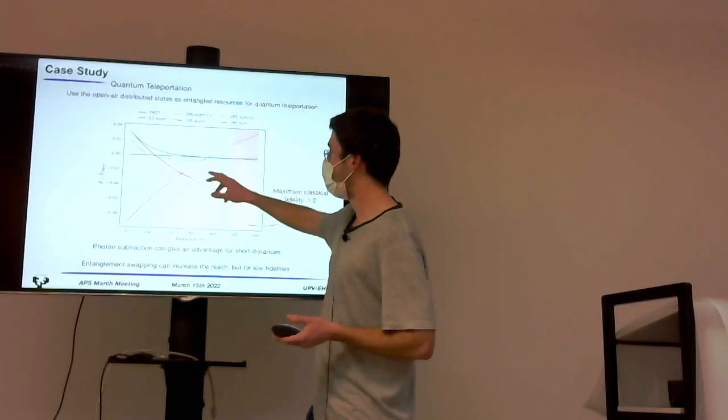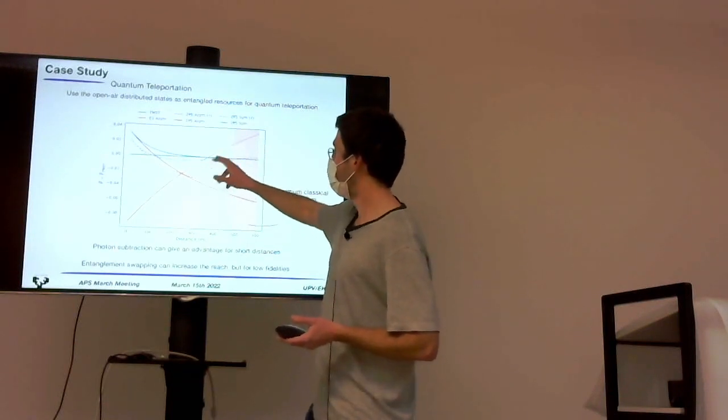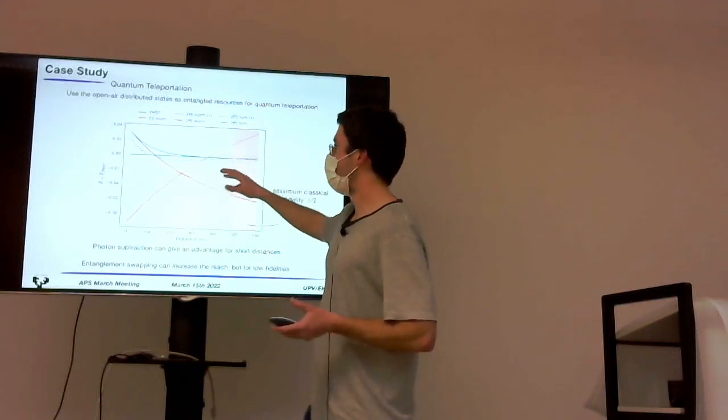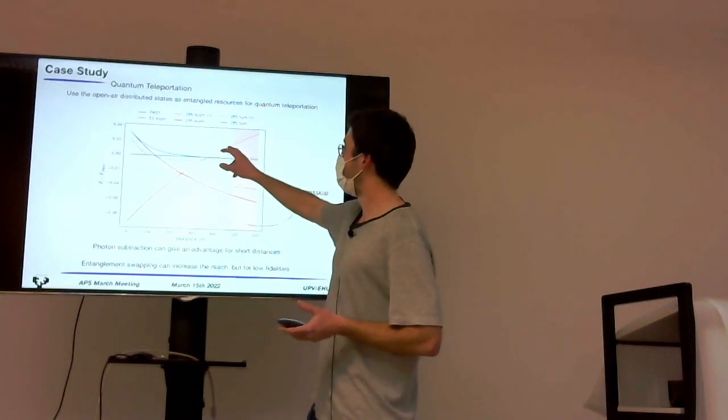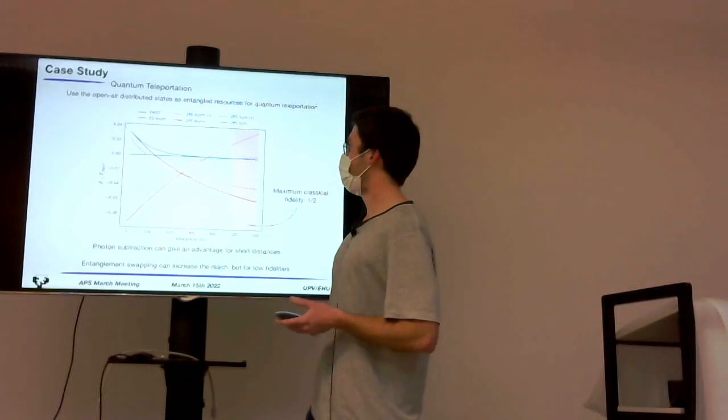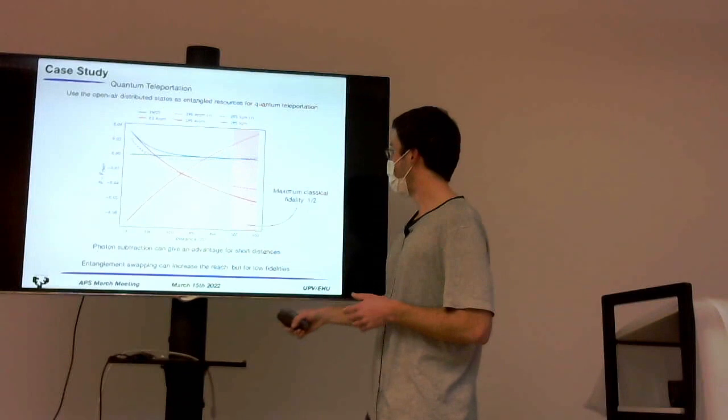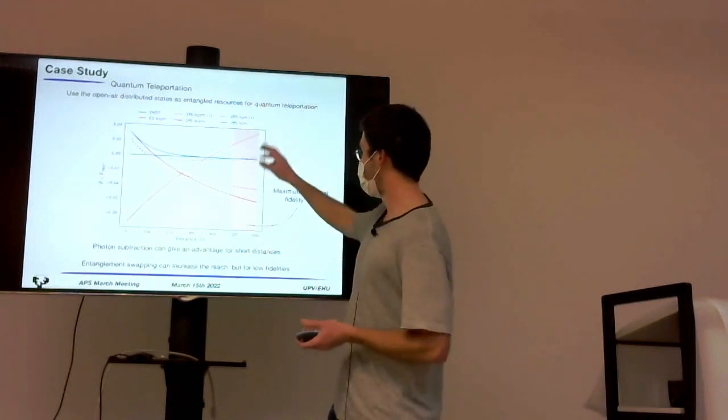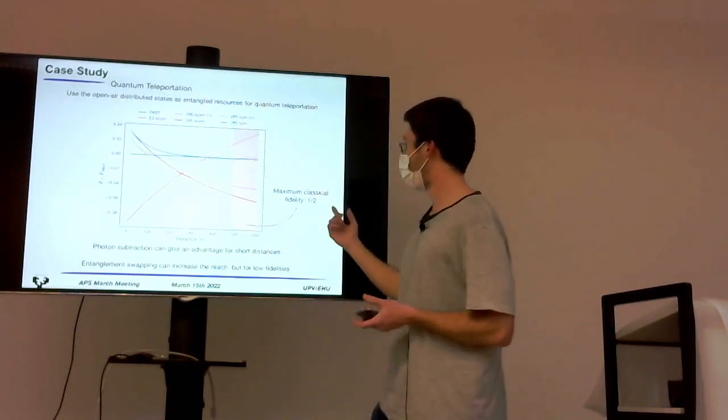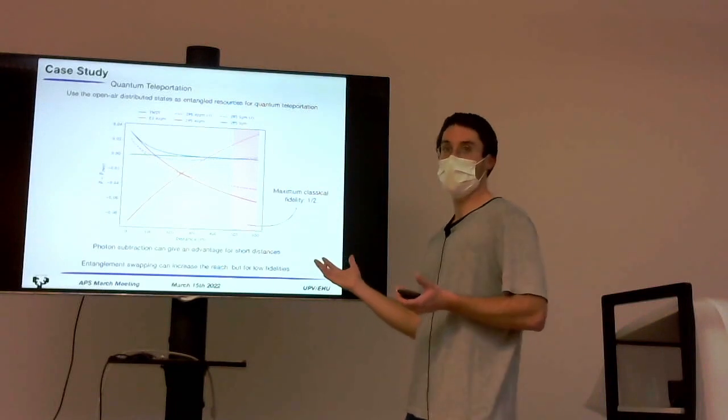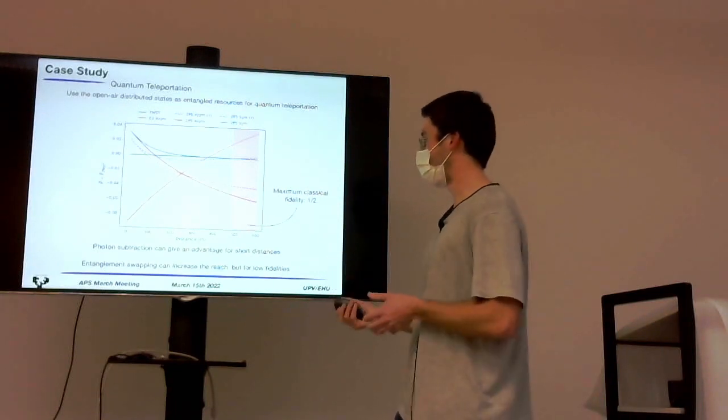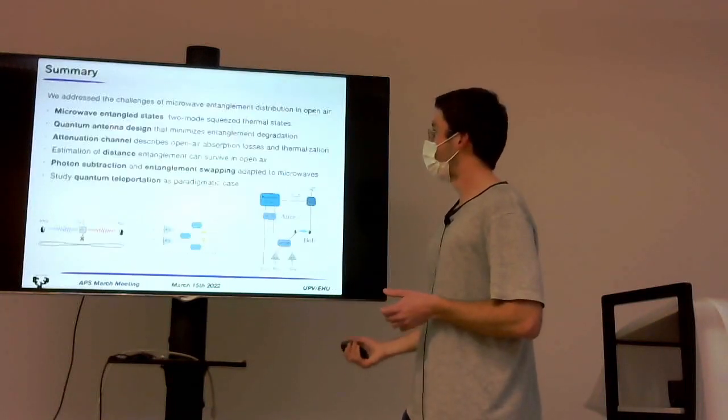And entanglement swapping, we see that once the fidelities are very low, and the state has entanglement that's been really degraded by the environment, then it can show an advantage. But it will be showing an advantage when the fidelities are quite low. And here, the region that we show in red is the maximum classical fidelity, is when the quantum advantage has been lost.